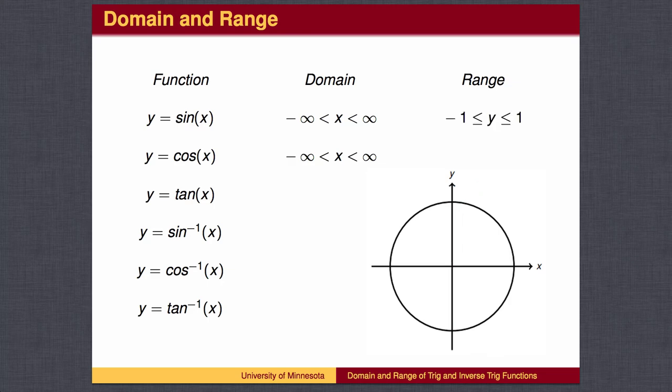The same applies to the cosine function. The output of the cosine function is a horizontal distance on the unit circle. The largest value occurs at the rightmost point of 1, which corresponds to the input angle 0, and the smallest value occurs at the leftmost point of negative 1, which corresponds to the angle 180 degrees, or pi radians. Therefore, the range of the cosine function is also all numbers between negative 1 and 1.